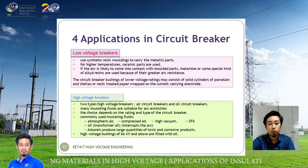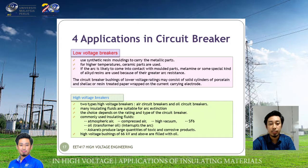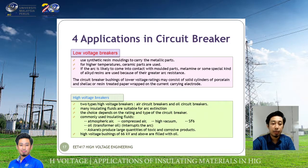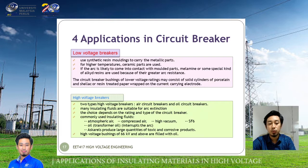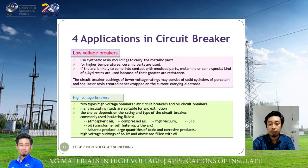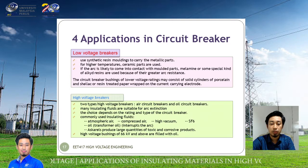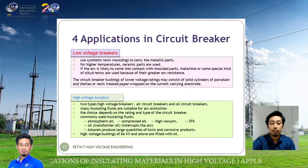What is the difference between the circuit breaker for low voltage and high voltage? The low voltage circuit breaker uses synthetic resin molding to carry the metallic parts. For higher temperatures, ceramic parts are used. If the arc is likely to come into contact with the molded part, melamine or some special kind of arc-resistant material is used because of its arc-generating resistance.